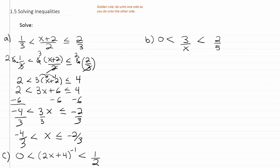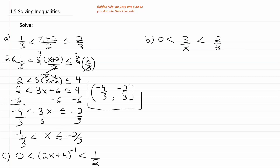We want to write that in interval notation: negative 4/3 comma negative 2/3. We use a bracket for the 2/3 because of the equal sign on that inequality, and a parenthesis on the left-hand side because of the inequality without the equal sign. So that's our answer in interval notation.